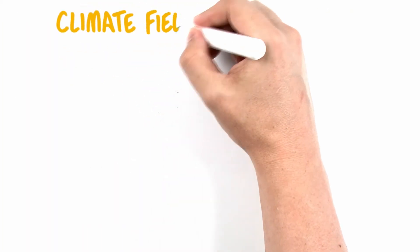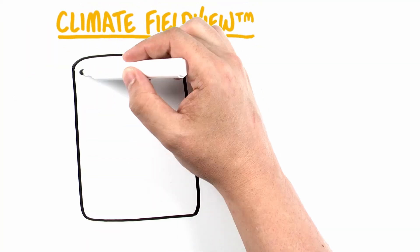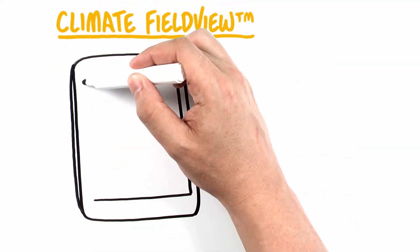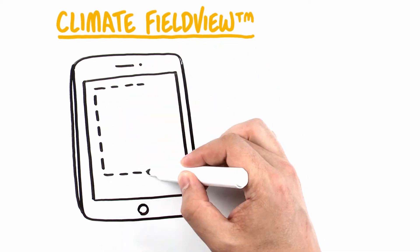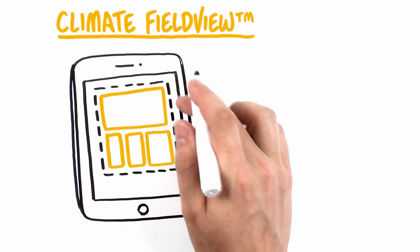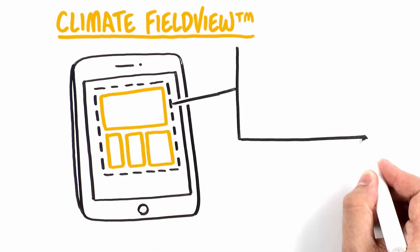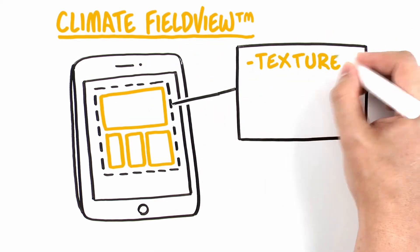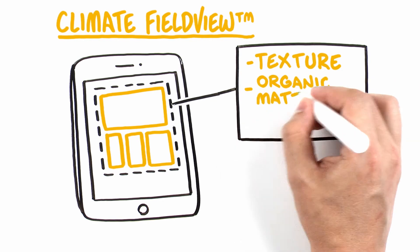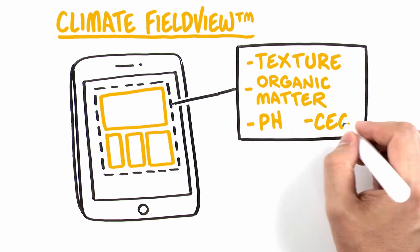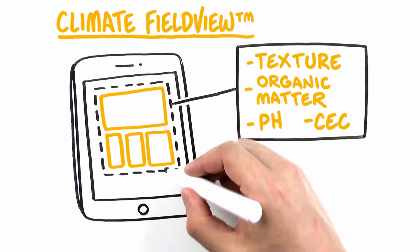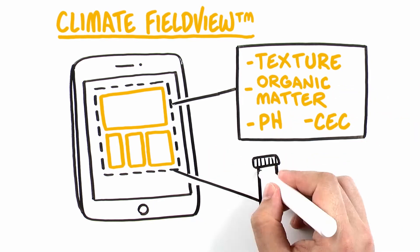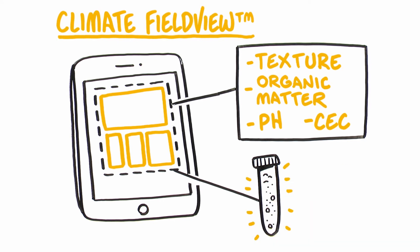With Climate Field View, you can quickly see soil maps for all your fields, including field-by-field summaries of key soil properties such as texture, organic matter, pH, and CEC. And you can upload your gridded soil sample data to ensure you are staying up-to-date on all your soil and fertility needs.